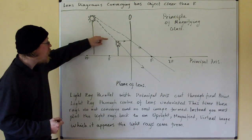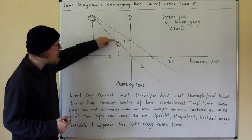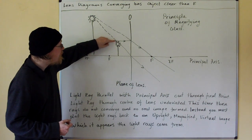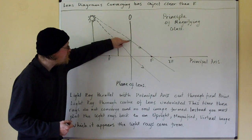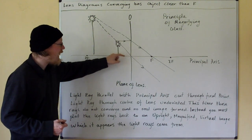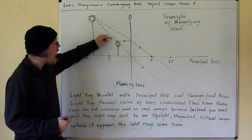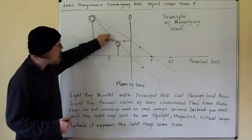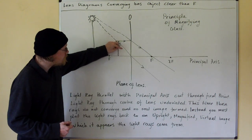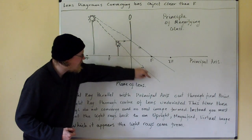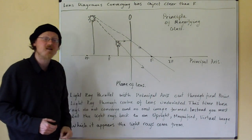So once again you do the same thing: the parallel ray to the principal axis comes out through the focal point, and the light ray that goes through the centre of the lens is undeviated.